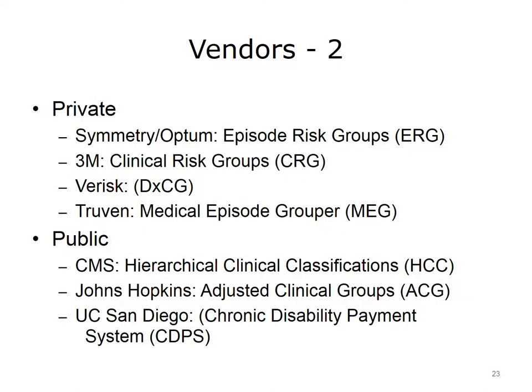Some of the larger private vendors of risk adjustment models include the Symmetry product from Optum, which calls its scores Episode Risk Groups. The 3M company produces scores called Clinical Risk Groups. Verisk produces risk scores given by the abbreviation DXCG. Truven has a product called the Medical Episode Grouper. Some public entities have also created ways to adjust risk. The Centers for Medicare and Medicaid Services, or CMS, created the Hierarchical Clinical Classifications. Johns Hopkins University created the Adjusted Clinical Groups, or ACG. The University of San Diego has maintained the Chronic Disability Payment System, or CDPS, which is targeted at the Medicaid population.